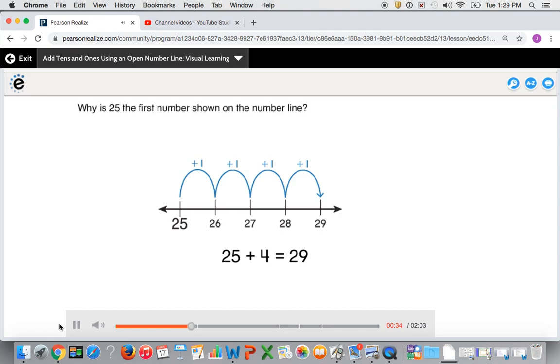Why is 25 the first number shown on the number line? 25 is the two-digit number that you are adding.